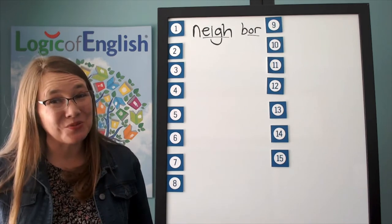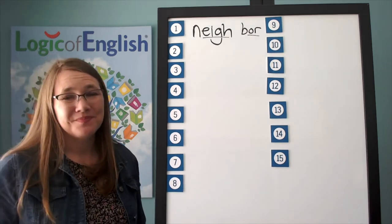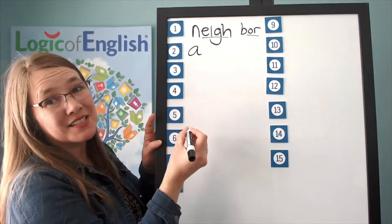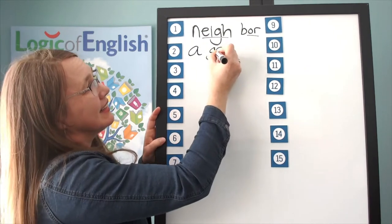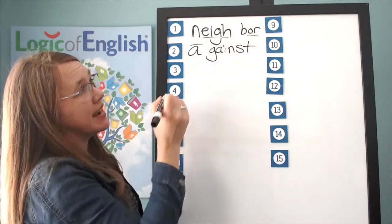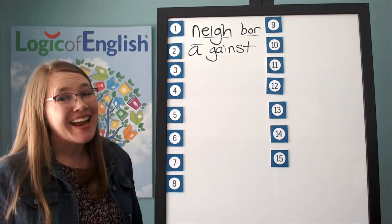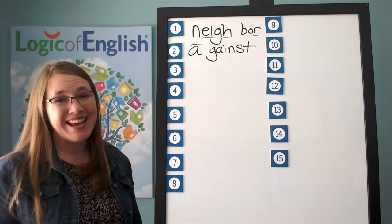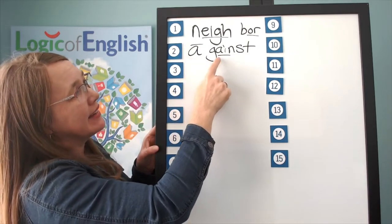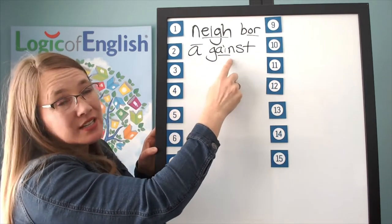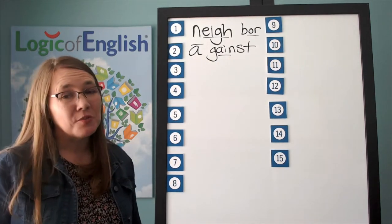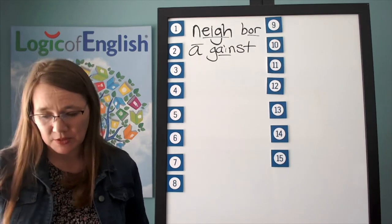A-Gainst. Sound it out as you write it. Help me to write it. The first syllable is A. The second syllable is against — G-A-N-S-T. We'll put a line over the A. Why did it say its long sound? A-E-O-U usually say their long sounds at the end of the syllable. And we'll underline the A. A-G-A-N-S-T. Against. Any vowel may sound like a or i in an unstressed syllable.